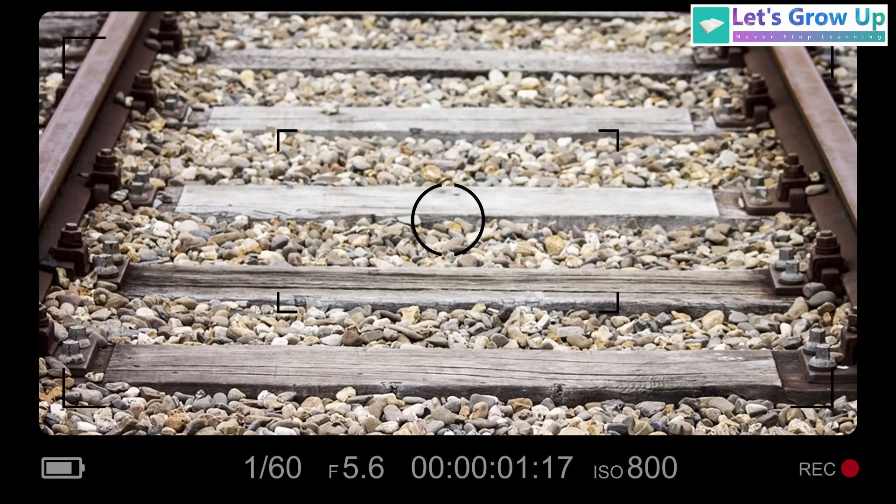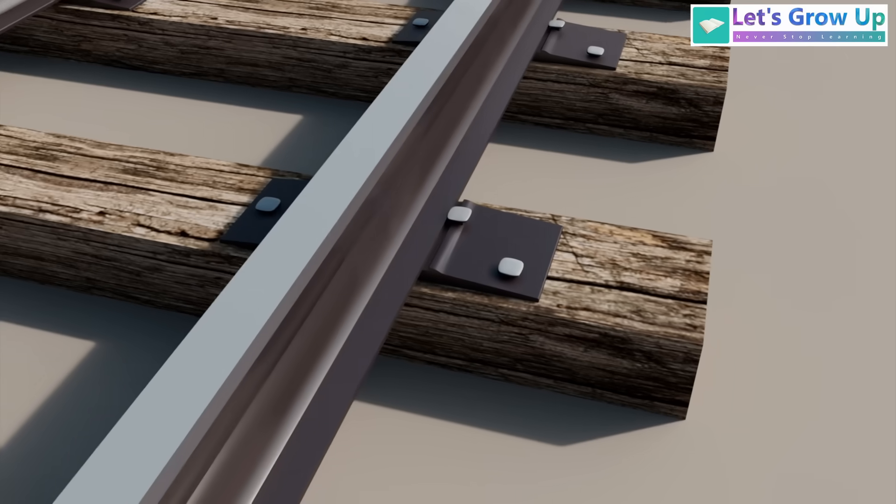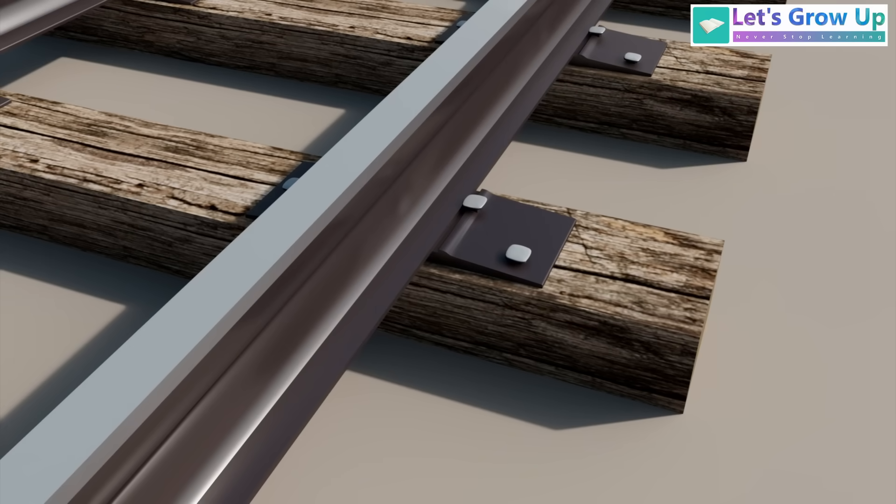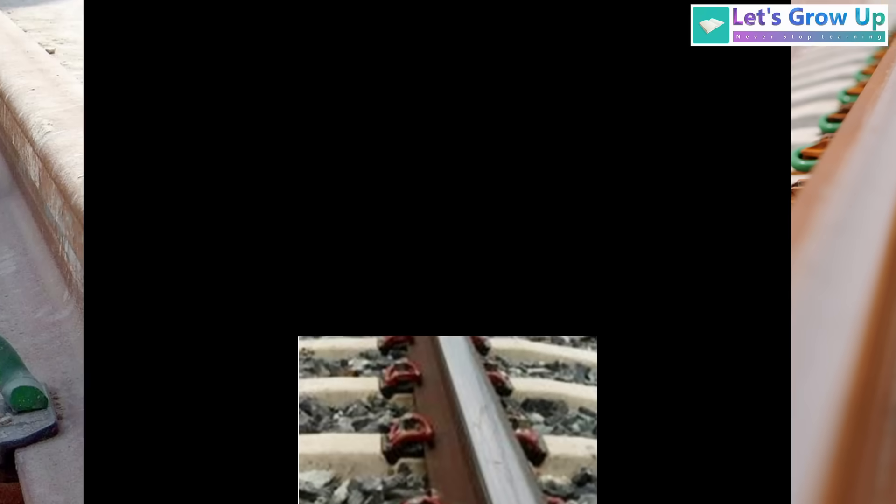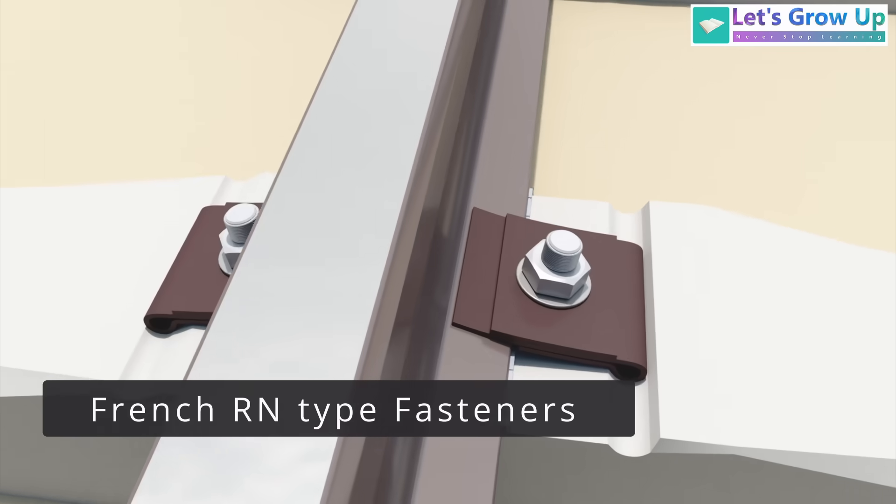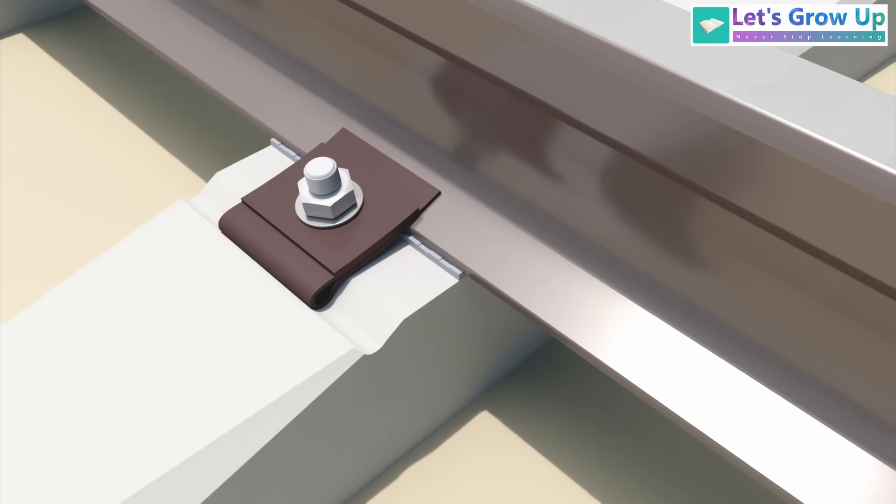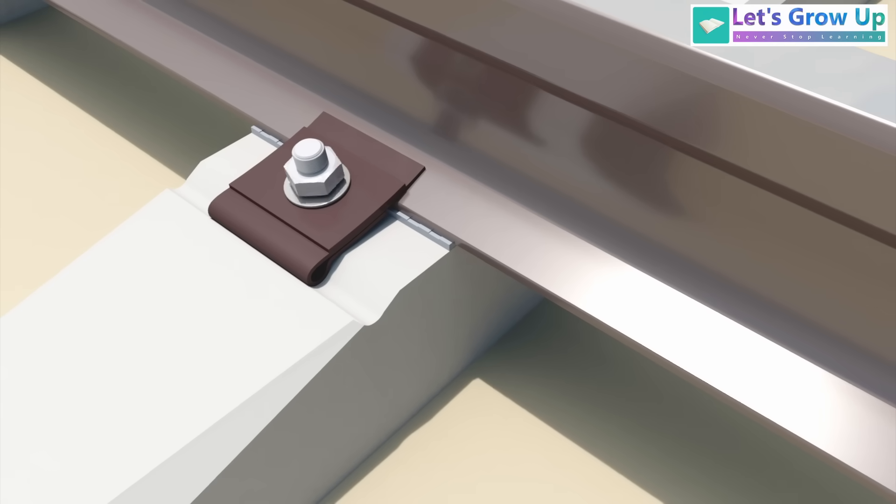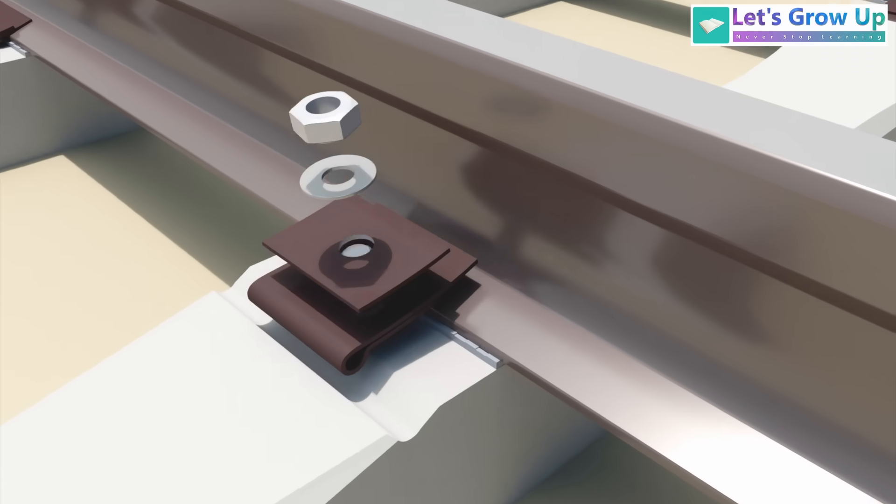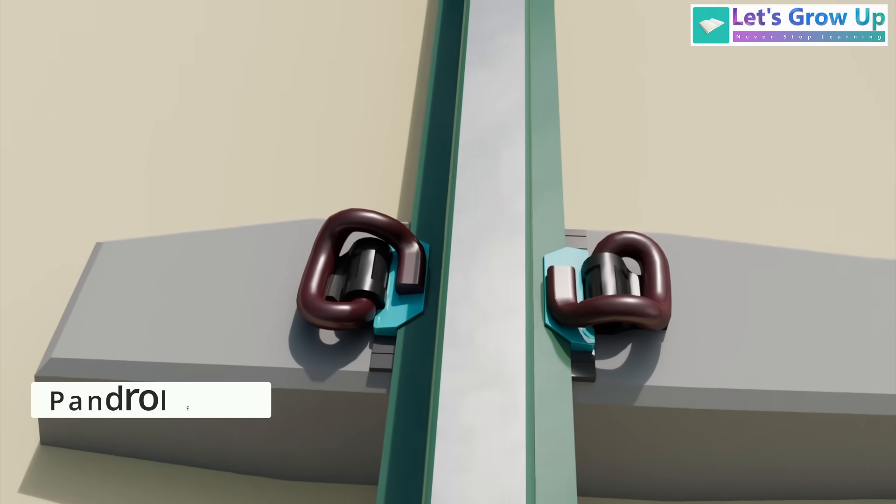The railway track has a rich history. In the past, tracks used wooden sleepers secured with tie plates and spikes. Different types of railway fasteners are now deployed across the globe. Japan introduced the French RN type fasteners in the early 1960s. When the blade fastening system couldn't satisfy the high-speed requirements, the industry shifted towards advanced elastic clips.